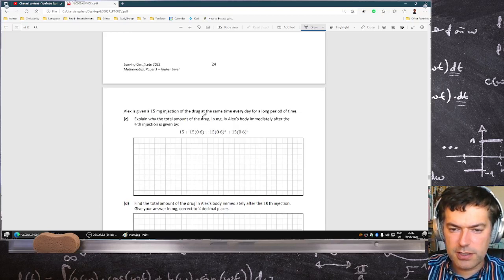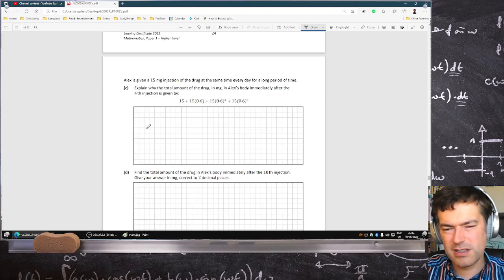He's given 15 milligram injection drug at the same time every day for a long period of time. Explain why the total amount of drug in milligrams in Alex's body immediately after the fourth injection is given by this.